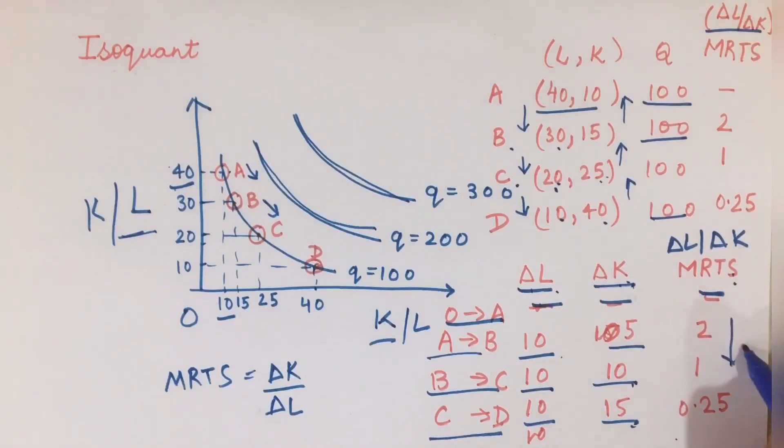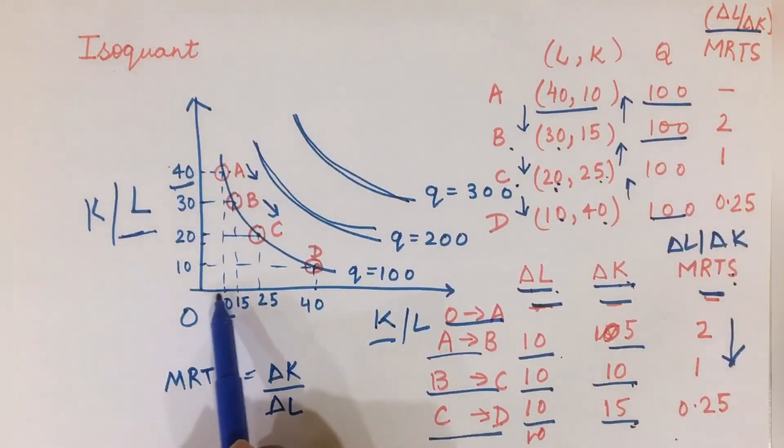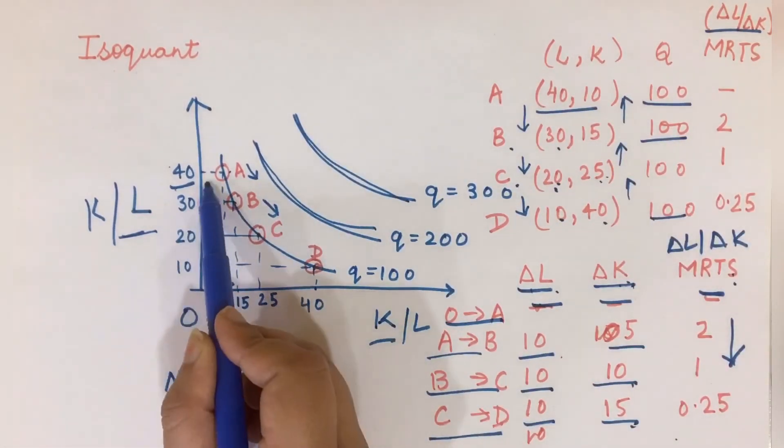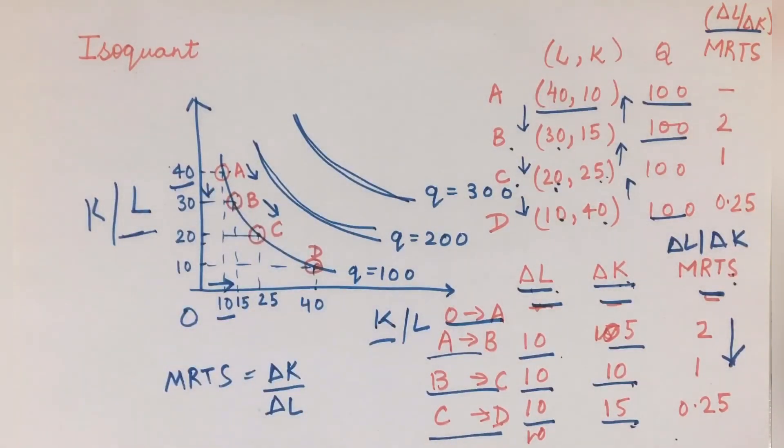If you see, this MRTS is falling, and due to this falling MRTS, my isoquants are convex to the origin. Why are they downward sloping? They are downward sloping because when my L is increasing, my K has to fall. So one input is increasing, one has to fall to keep the output constant.